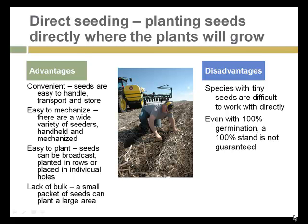Once seeds are prepared for planting, they can either be sown directly into the soil where they'll be grown — convenient and easy to mechanize, especially for corn, soybeans, and other commodity crops. Seeds can be planted through broadcast seeding, in rows, or placed in individual holes. However, species with tiny seeds are difficult to work with, and even with 100% germination, fungal diseases and other problems mean a 100% stand is not guaranteed.